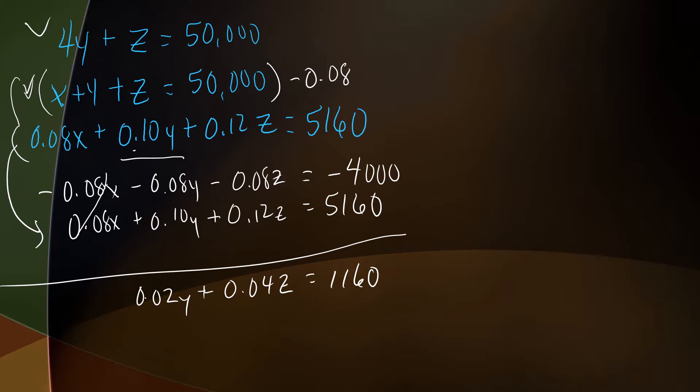All right, so now I've got just a Y and a Z variable, but now I've got to solve that with this equation right here. So we've got 4Y plus Z equals 50,000. We've got 0.02Y plus 0.04Z, and that equals 1,160. All right, so probably the easiest way to get rid of this thing is to eliminate the Z, since that's just a 1Z right there. And if I multiply that equation by negative 0.04, I should end up with a negative 0.04Z, and I can eliminate the Z.